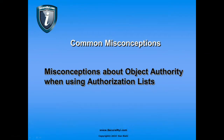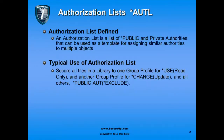In our next common misconception, we want to talk about misconceptions about authority to objects when we use an authorization list to secure those objects. The authorization list is a list of authorizations that define the public and private authorities that can be used as a template for assigning similar authorities to multiple objects. A typical use — for example, a payroll data library — would be to secure all the files in that library to one group for use rights, maybe a query group or a data analysis group, and to another group, the payroll group, that actually updates the data, give them change rights using the authorization list. All other users on the system would fall into the public bucket and get exclude rights to the authorization list, and therefore to the object secured by the list.